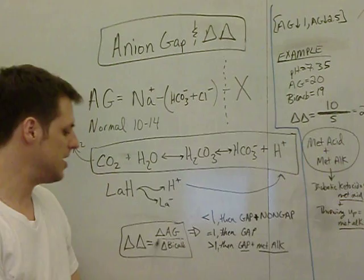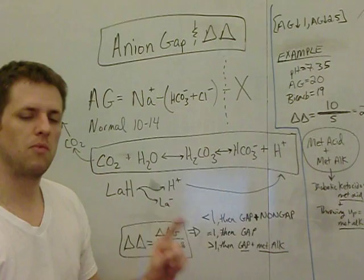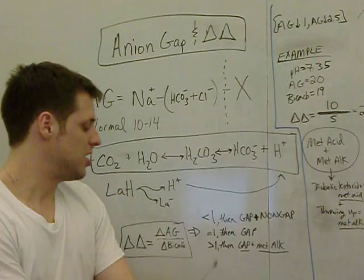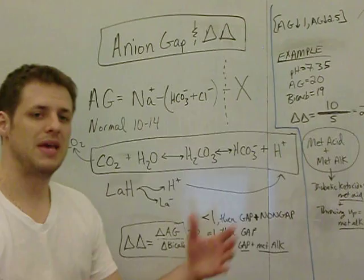Less than 1. That means that you have these big changes in bicarb and smaller changes in anion gap. That means you have more than one thing that's causing the bicarb to go down. Gap acidosis and a non-gap acidosis like maybe diarrhea. Finally, if it's greater than 1, then you have a gap acidosis and a metabolic alkalosis.